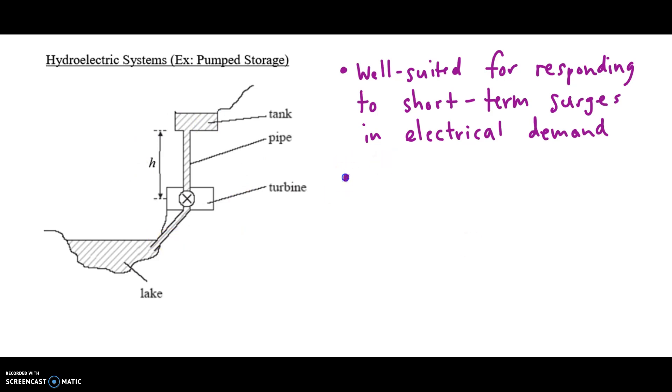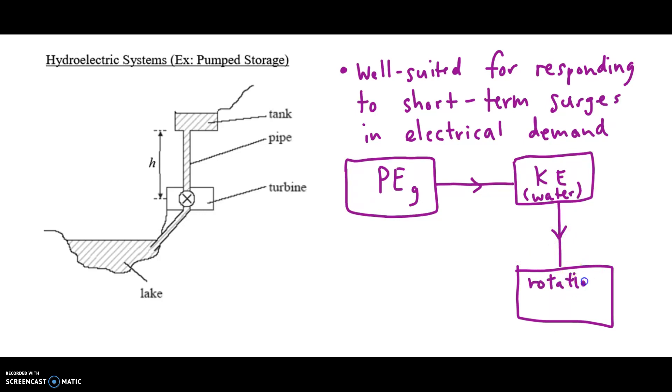Alright, so what's the conversion? Well, you've got gravitational potential energy of the water. It flows down. That's held in the tank, that water. It flows down. It turns into kinetic energy of the water. And then that flowing water, moving really fast, slams into the blades of the turbine, spins that turbine. Now we've got rotational kinetic energy of the turbine.